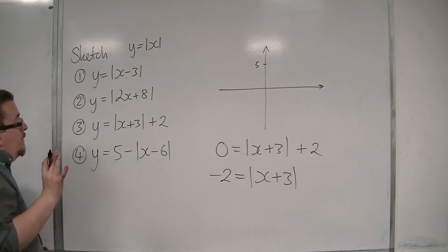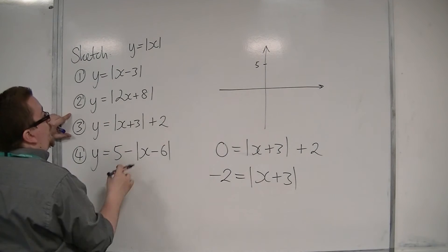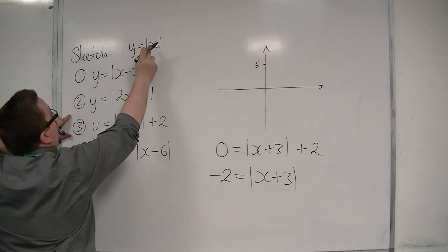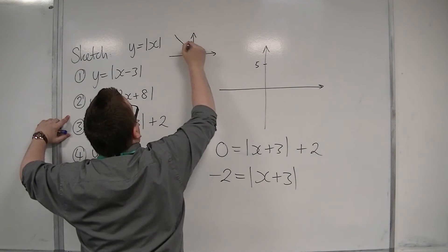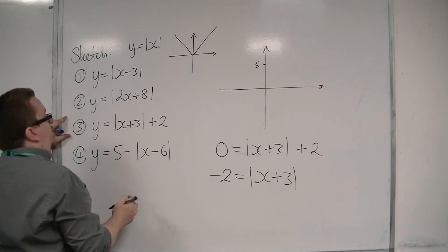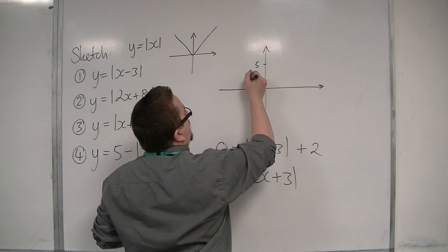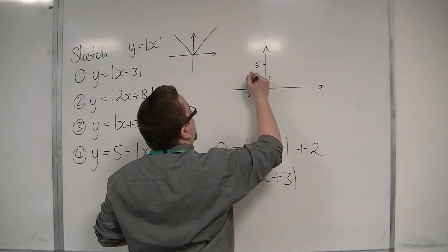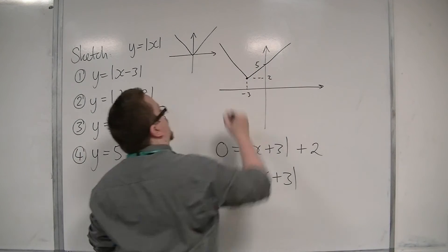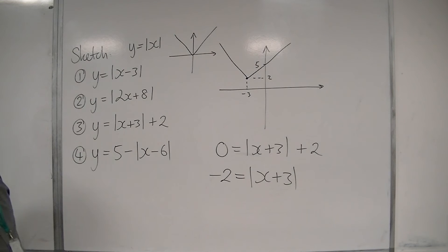So we must fall back on our understanding of the graph transformation. The point zero, zero on the original modulus graph has been translated by the vector minus three, two. So minus three, two, so it would go here. And so that must be what this graph looks like.